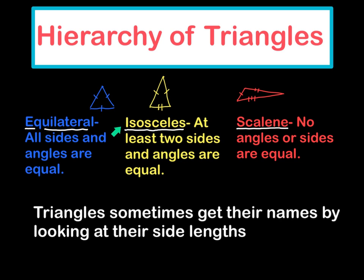Then if you look at isosceles, isosceles is at least two sides and angles are equal. So in this case, this side and this side are equal and this angle and this angle will also be equal.